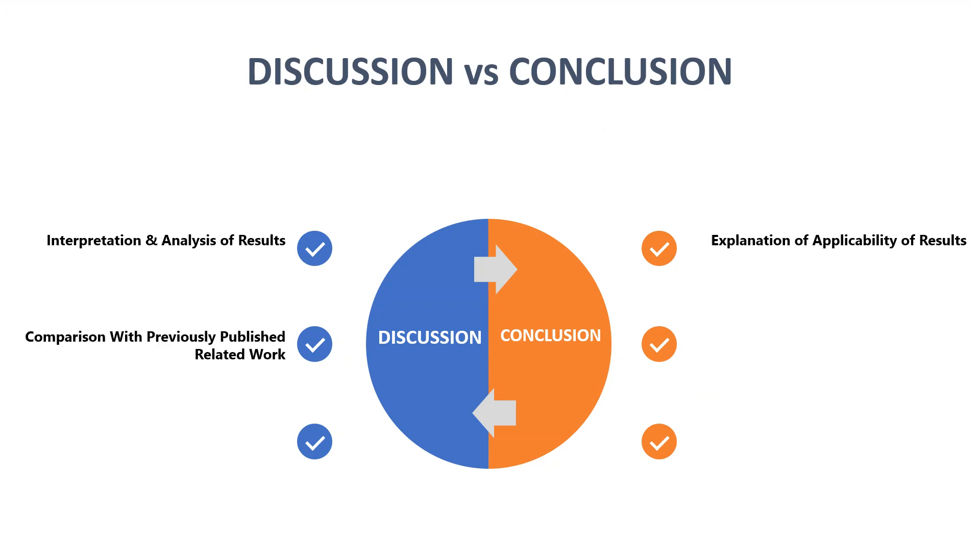Going to the second main point: once the results are established, we compare these results with previously published works in the literature. If the same type of works are available in the literature, we compare our results with those results and draw a fine point of what we have achieved. This is how the second point goes.